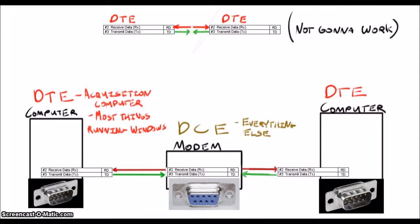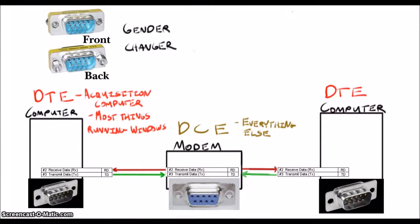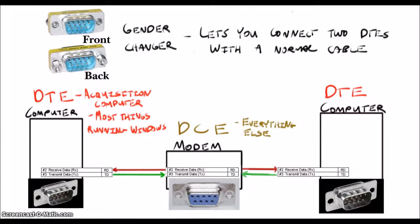Which leads into a discussion of null modem and gender changer adapters. You've probably seen these floating around if you checked out a survey equipment rack. Gender changers just go from male to female plugs. Remember how DTEs and DCEs generally have male and female plugs respectively? Well, gender changers let you connect two DTEs or two DCEs using a normal cable. You'll still have a problem with the pins though.